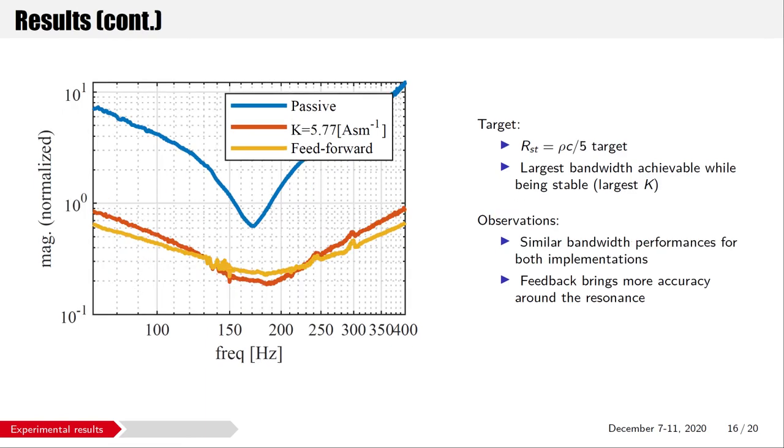Here is the same measurement as the previous slide, but with a target of one-fifth of rho C. The two control schemes perform quite similarly, although the feedback is still more accurate at the resonance. It is closer to 0.2.